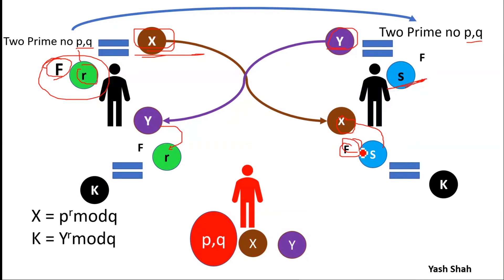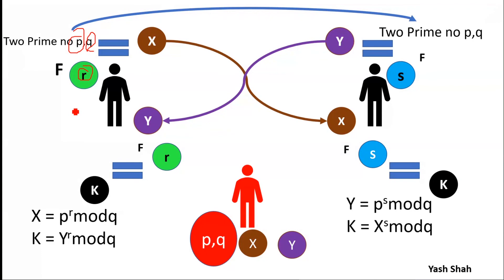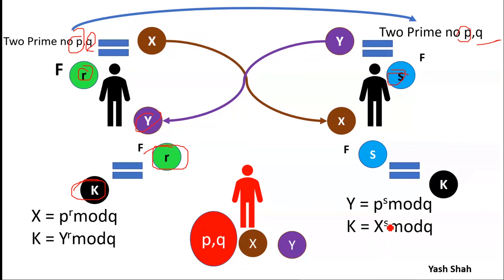How do we generate x? x is equal to p raised to r mod q. Similarly, how do we generate y? y is p raised to s mod q. Finally, how do we generate the key k? It is the same function: Alice computes k as y raised to r mod q, and Bob computes k as x raised to s mod q.